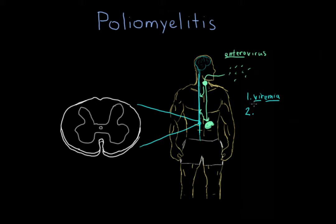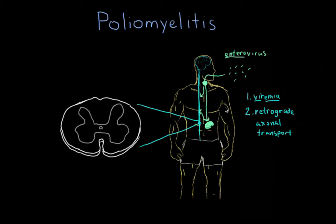The other theory is retrograde axonal transport. Retrograde means it goes backwards — it's transported backwards. Axonal refers to the axon of a nerve. Generally, what a nerve looks like is a cell body, where the nucleus, the cytoplasm, and the other organelles are.